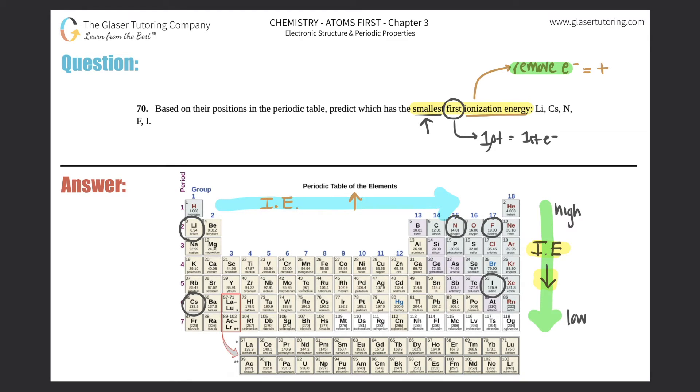We can automatically cancel out all the ones at the top of the periodic table, because the lower elements would have smaller ionization energies. So we can say bye-bye to fluorine, nitrogen, and lithium, because cesium and iodine are at the bottom.